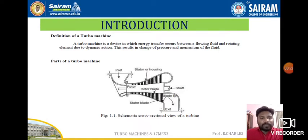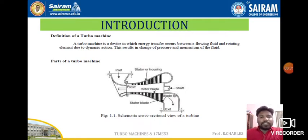We'll see the definition of a turbo machine and the parts of a turbo machine. A turbo machine is a device in which energy transfer occurs between a flowing fluid and a rotating element due to dynamic action.